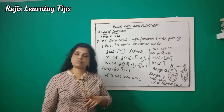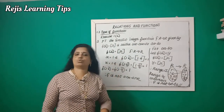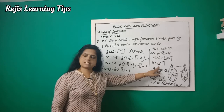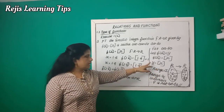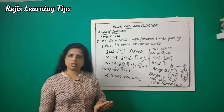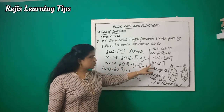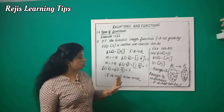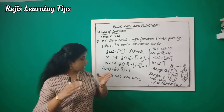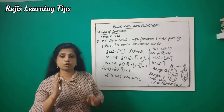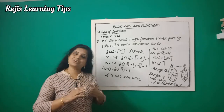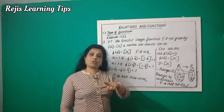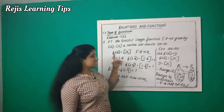So our greatest integer function is neither one-one nor onto. The range equals Z, which is not equal to the codomain R. Next problem.